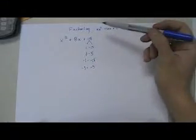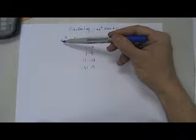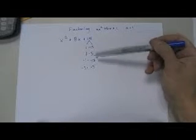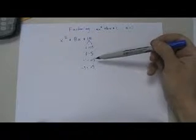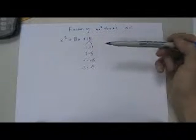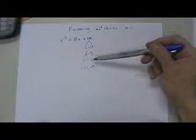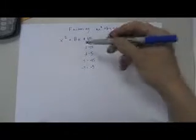Now, in a polynomial where the highest order term has a coefficient of 1, these factors must add up to equal the middle term. Well, I know that negative 1 and negative 15 add up to a negative number, and I know that negative 3 and negative 5 add up to a negative number.